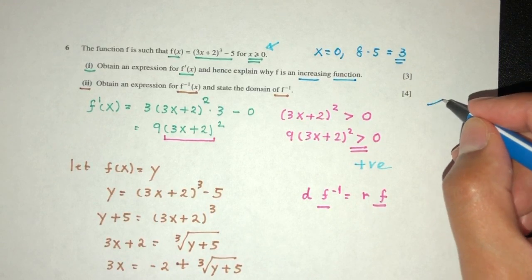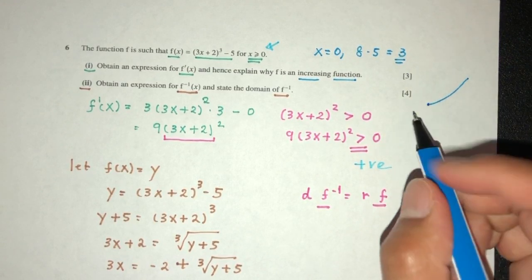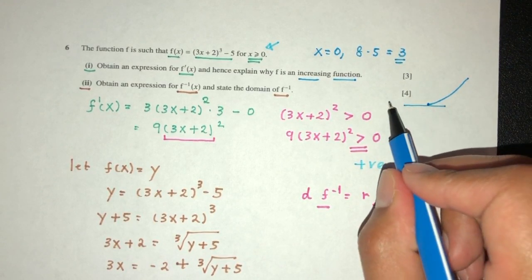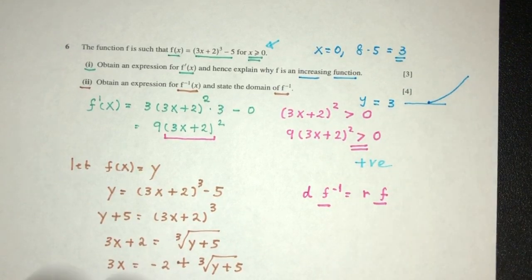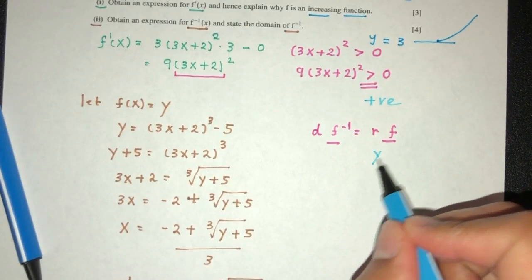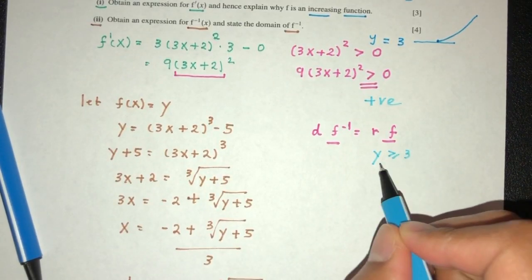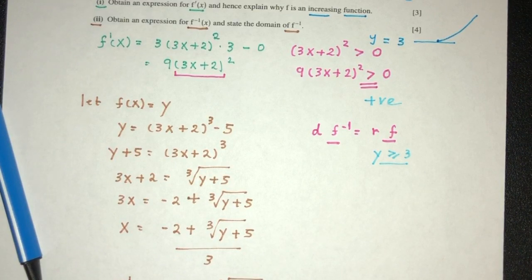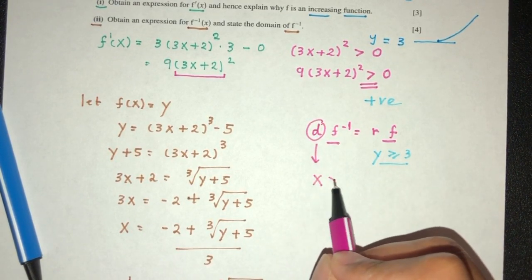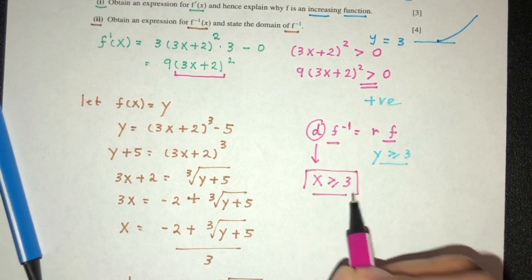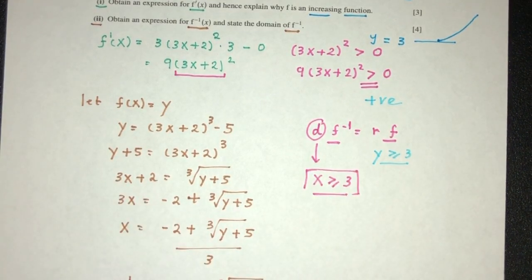So it means that the curve will look something like this, from the value of 3. This is the y value, it's 3, it keeps going up from that point on. Now, this is the range of f, which is y is more or equal to 3. However, to define the domain, we have to write that in terms of x. x has to be more than 3. That will be the answer for part 2 of the question.